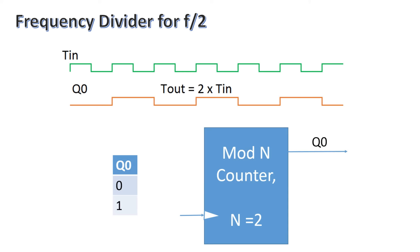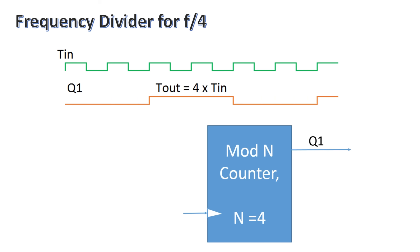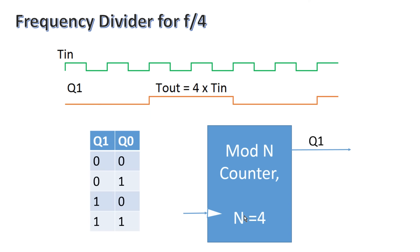Let us consider another example: a clock frequency divider for f/4. Following the first norm, we include a mod-4 counter. Mod-4 counter counts from 0 to 3, requiring two flip-flops, and this is its truth table. Looking at the MSB bit Q1, this is a signal of frequency f/4. It remains zero for two cycles and is high for two clock cycles, so its duty cycle is also 50 percent and no alteration is required. Q1 is our expected output — a signal of frequency f/4 with time period four times the input.